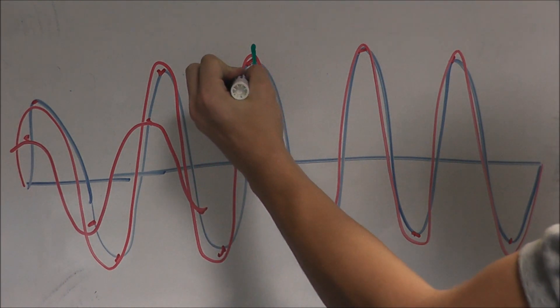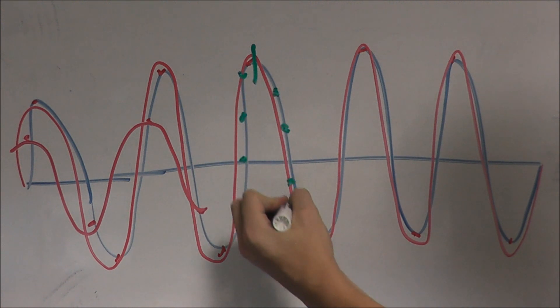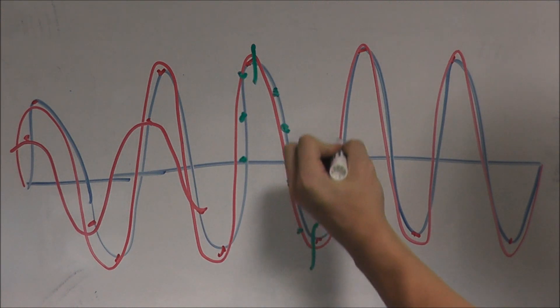Obviously, the higher our sampling rate, the more accurately our scope can construct a waveform. That's basic linear approximation.